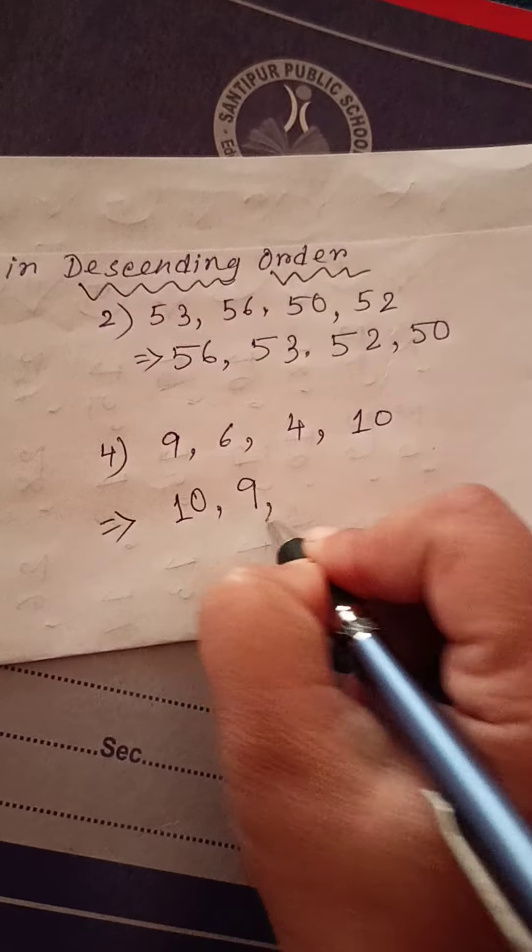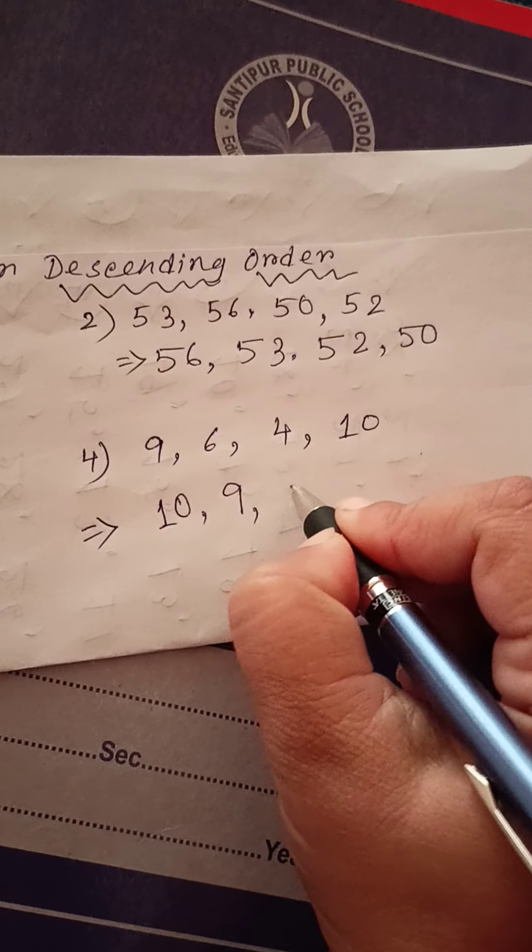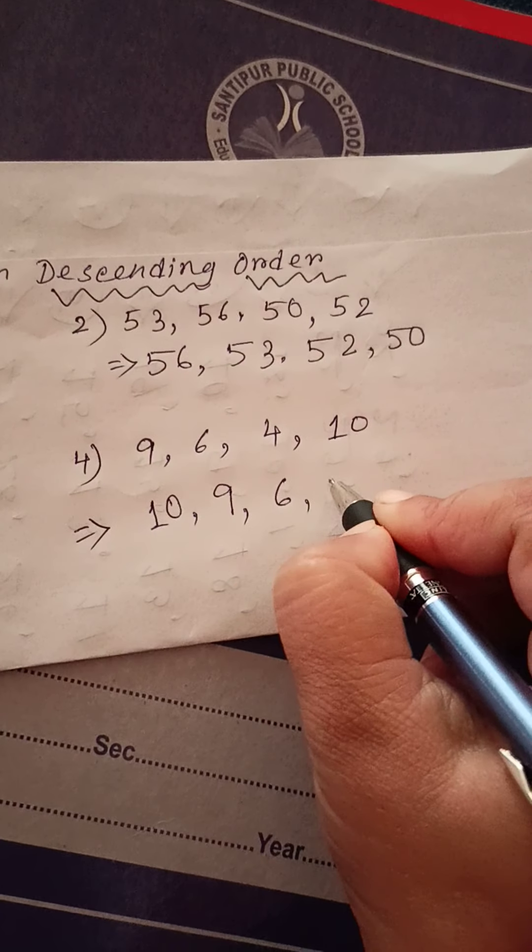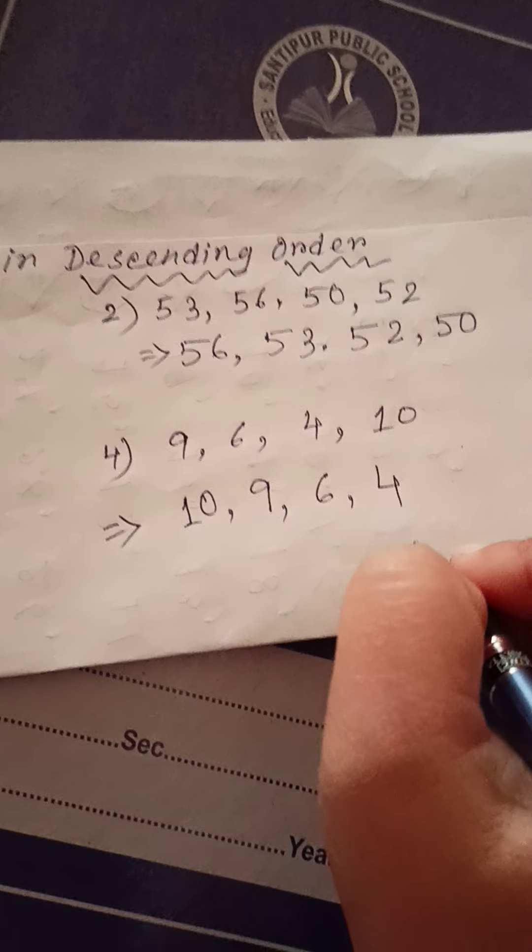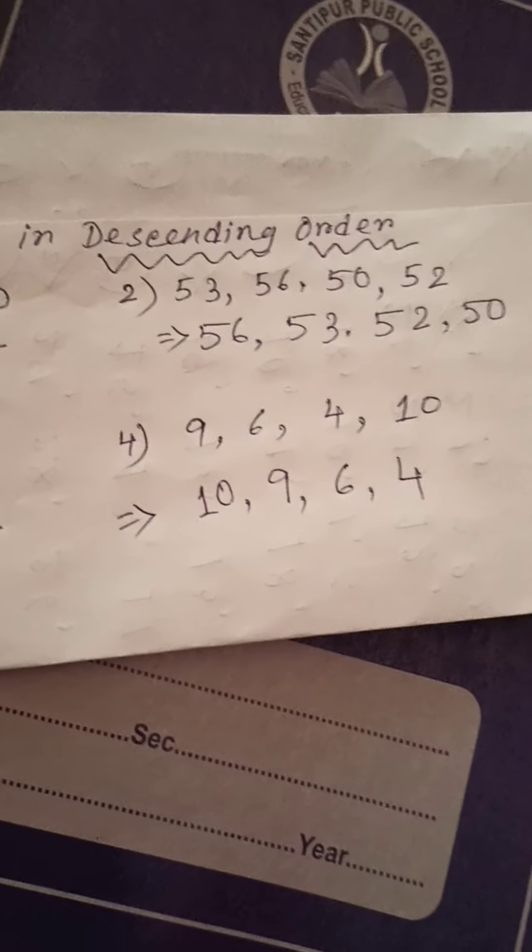And, which number will come after ten? Yes. Nine. Nine. Nine after six. Then, four. So, here is ten is the biggest number and four is the smallest.